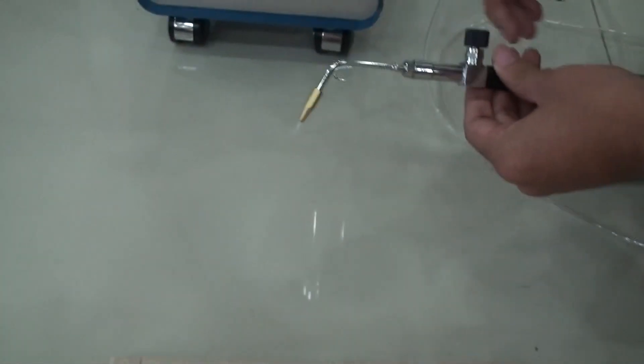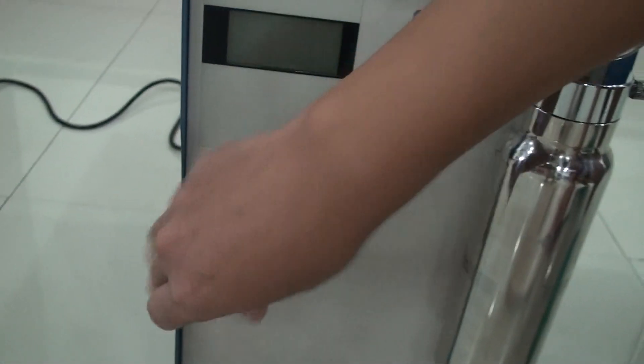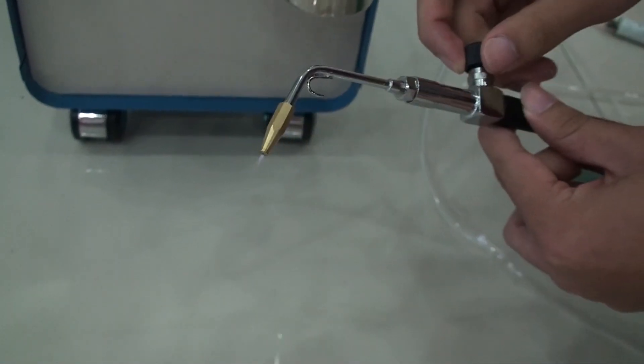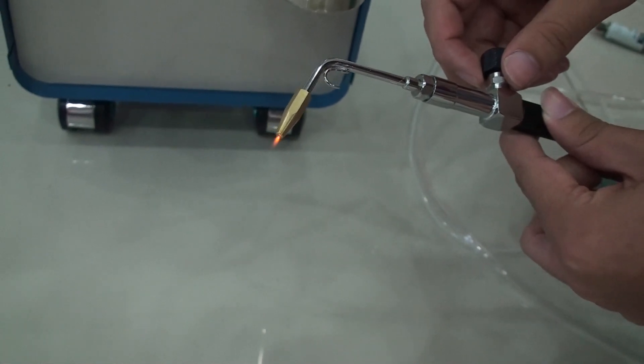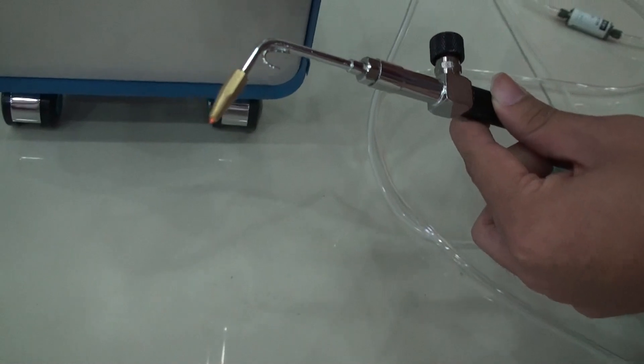Now the experiment is over. If you want to turn off the machine, you have to turn off the machine first. You can see the flame is still on, so you have to wait until the flame is out. The flame is out.